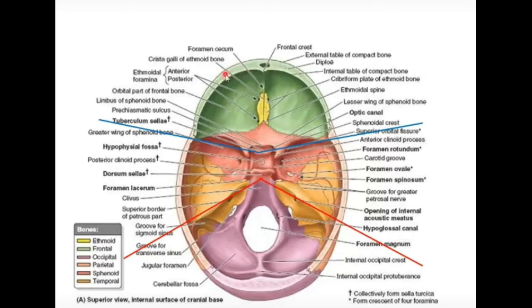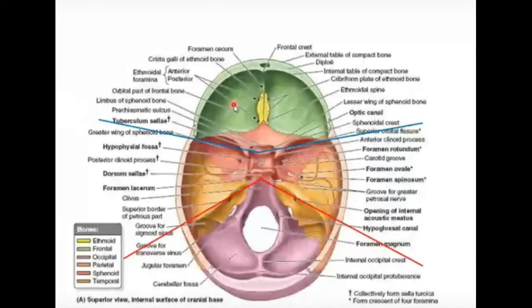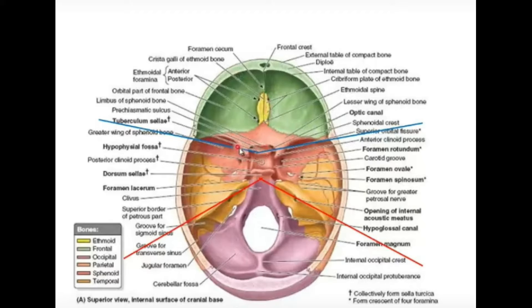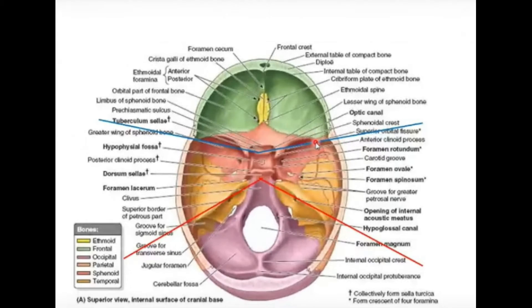The anterior cranial fossa is anteriorly bounded by the frontal bone. This is the view of the skull if we remove the skull cap — we will view the cranial cavity. The anterior cranial fossa is anteriorly bounded by the frontal bone and posteriorly it extends up to the posterior borders of the lesser wing of sphenoid, which is the posterior limit of the anterior cranial fossa.